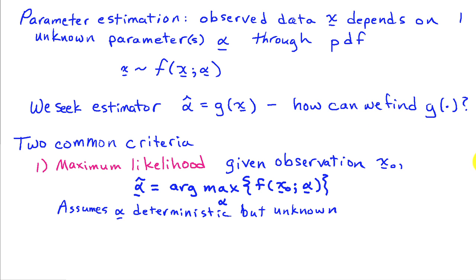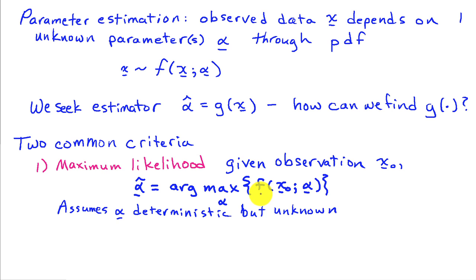In general, we're going to assume that our observed data x depends on the unknown parameters, which we'll call alpha, through a probability density function. That is, some observation x is distributed according to the probability density function f of x; alpha. So what we're trying to find is an estimator, alpha hat, which is some function g of x.